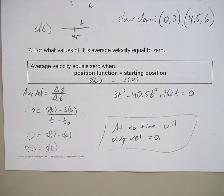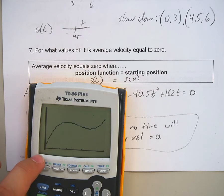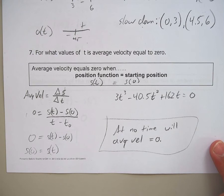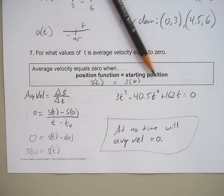What you're doing here, again, is you are setting your function to zero, and you're trying to find the average velocity. At no time will average velocity equal zero. Okay, have a good one.